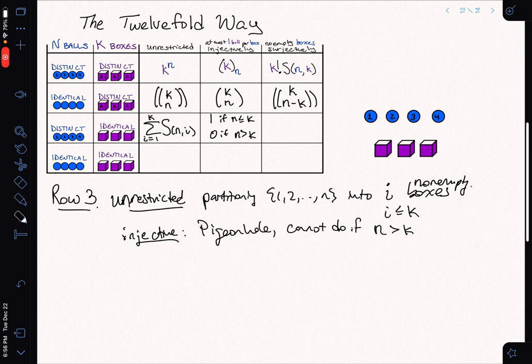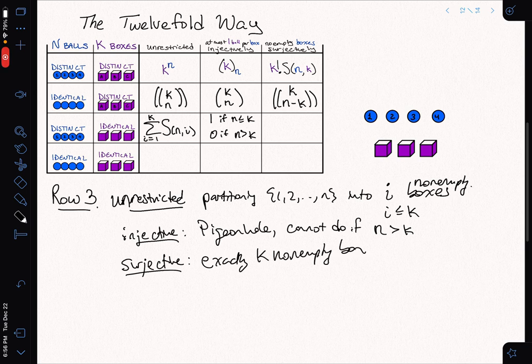Now how are we going to do it for the surjective case? For the surjective case, this is sort of like the unrestricted case, except now I know that the number of non-empty boxes is exactly k. So here I'm going to have exactly k non-empty boxes. So this is just the Sterling number, s(n,k), a single Sterling number, because I'm set partitioning these based on which ones get put into a box together.